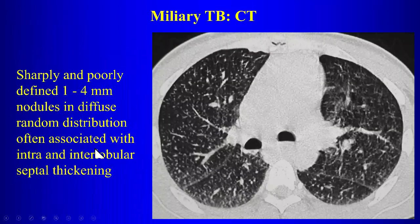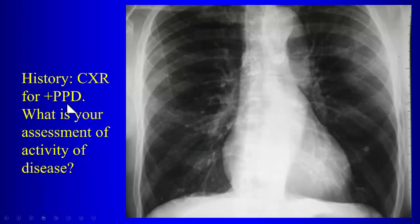In miliary TB, you will have multiple small nodules; in 30% of cases there are other findings like consolidations, cavitation, calcified nodes, or lymphadenopathy. On CT, hematogenous dissemination gives a random distribution of nodules. Always think about miliary TB when you have these tiny nodules.